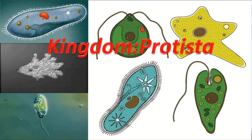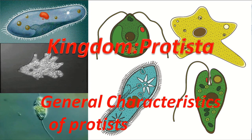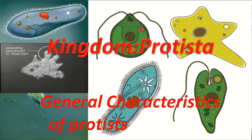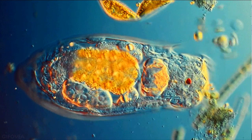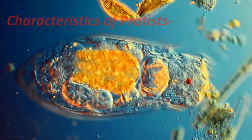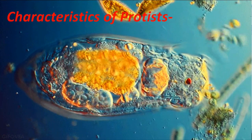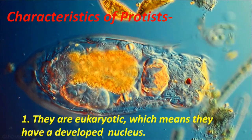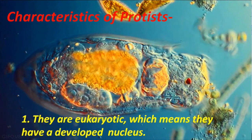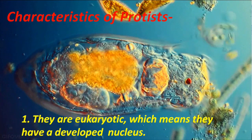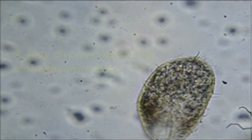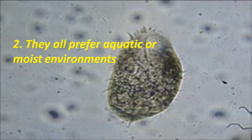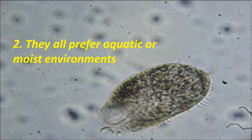Kingdom Protista: General Characteristics of Protists. Characteristics of Protists: They are eukaryotic, which means they have a developed nucleus. They all prefer aquatic or moist environments.